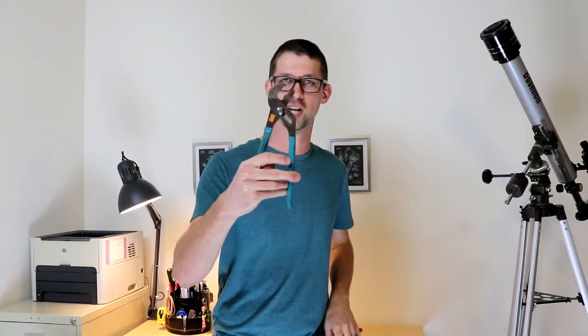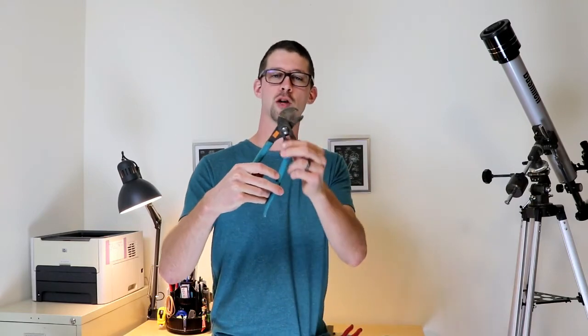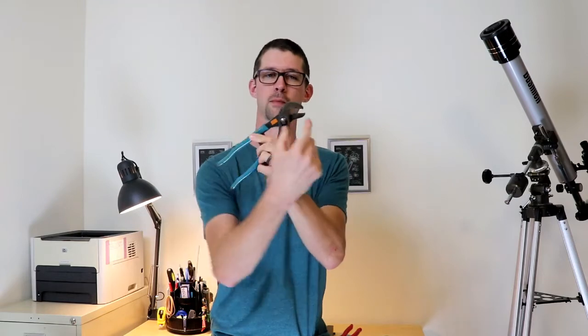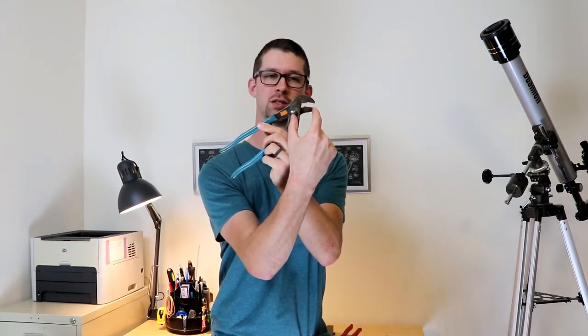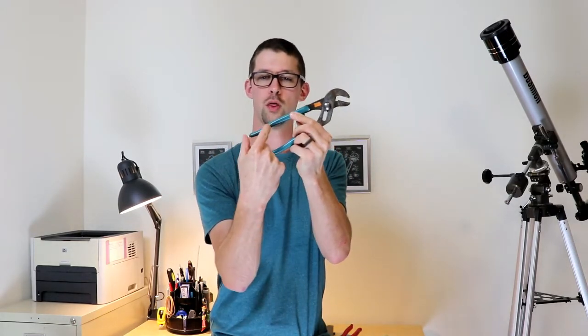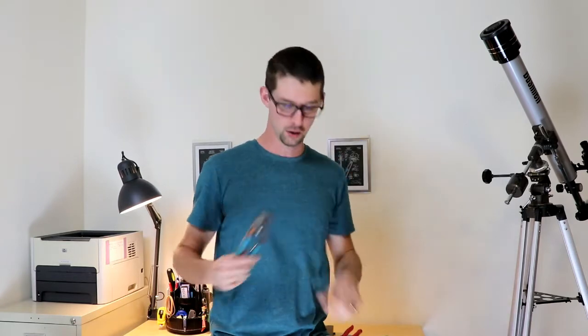If we look at a pair of channel locks for a moment, we'll see that the grip ratio, that is the distance from the pivot to the end of the jaws versus the pivot to the end of the handles, is about, let's compare that distance, one, two, three to one.